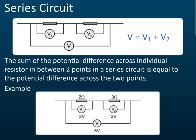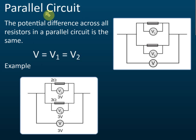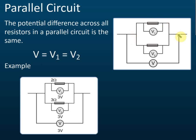For a parallel circuit, the potential difference across all resistors is the same. For example, if these two resistors are in a parallel circuit, V1 is the potential difference across the first resistor, V2 across the second, and V is the potential difference across both together. They are all equal.